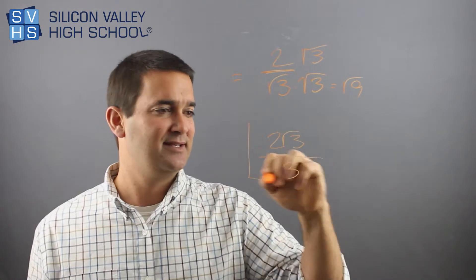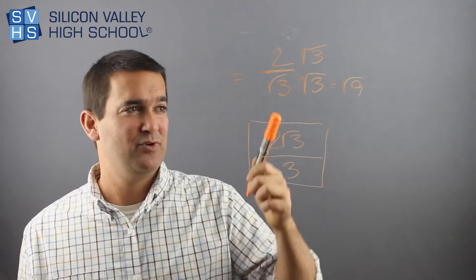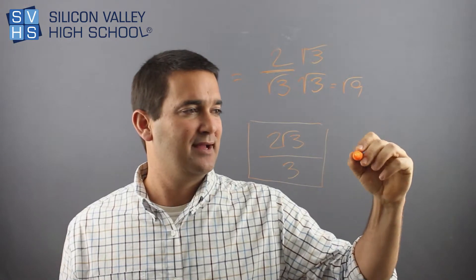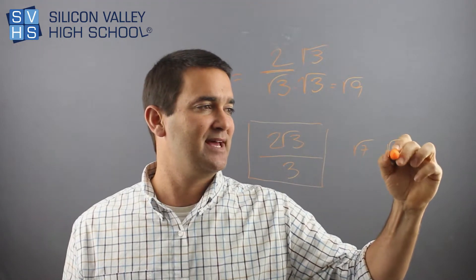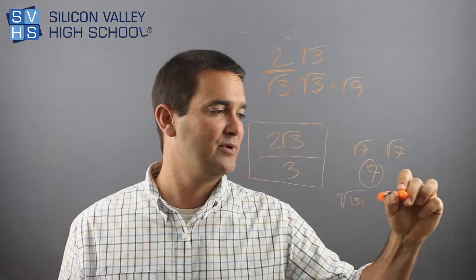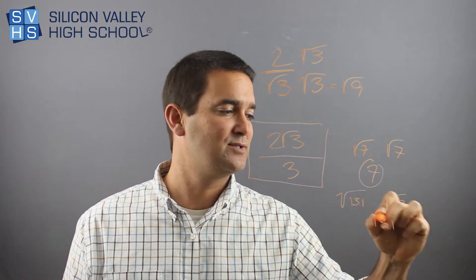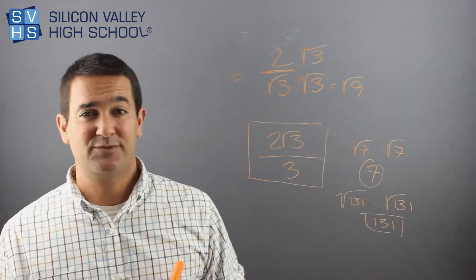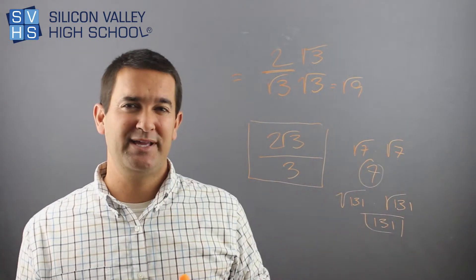So for example, so this is done, I'll box that. But just to move on with this thought, if you had like root of 7 times root of 7, don't think it's 7. If you had root of 131 times root of 131, don't think it's 131. So that's rationalizing the denominator. It's pretty easy.